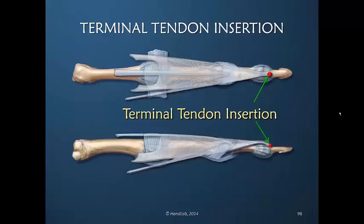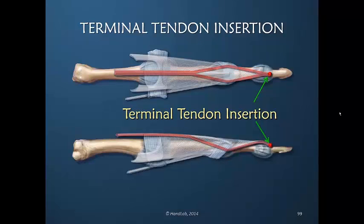The terminal tendon insertion, very similar to the central slip insertion, occurs just across the joint as it inserts into bone — not being mechanically very strong. Therefore, even though the entire power of the dorsal apparatus ends in the terminal tendon insertion, that does not mean this is a very powerful point of insertion. The power distal to the MP joint is somewhat diminished because it's secondary — all the primary power is going to extend the MP joint.